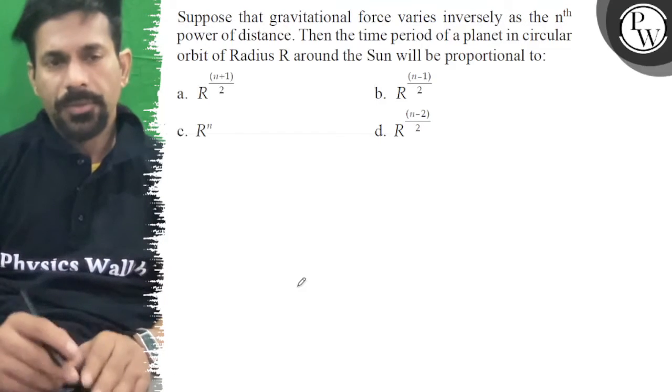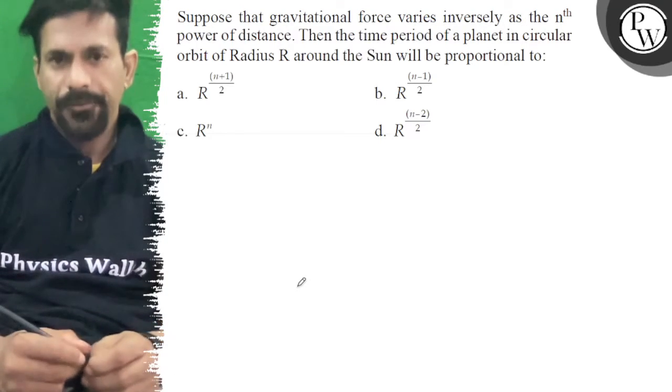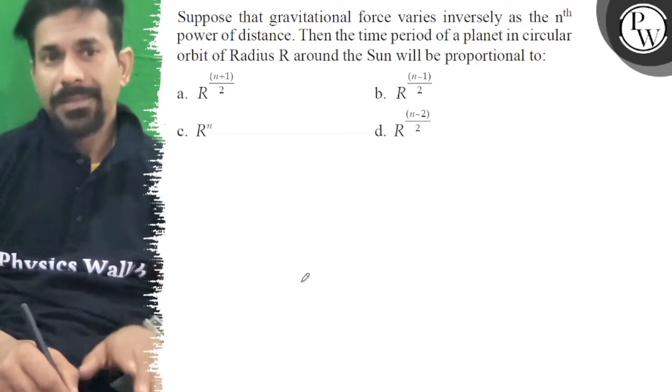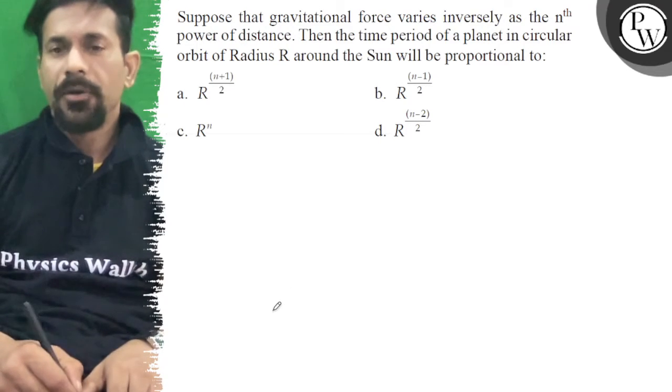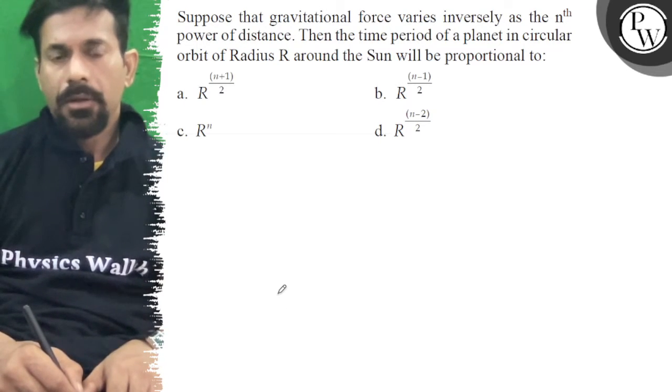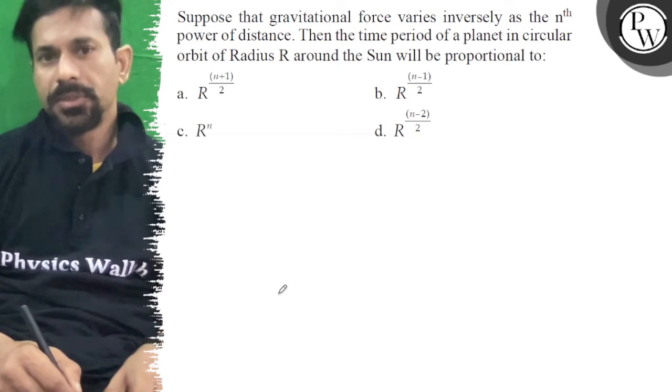Hello, let's do this question. Suppose that gravitational force varies inversely as the nth power of distance, then the time period of a planet in circular orbit of radius R around the sun will be proportional to...